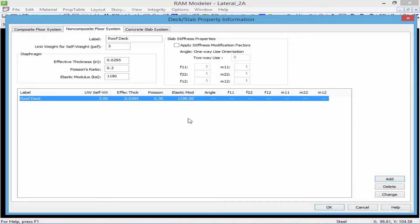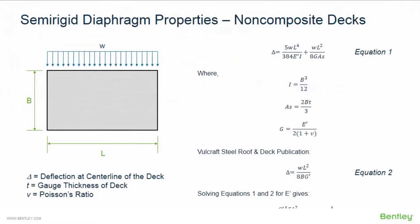You may need to consult your deck manufacturer for determining some of these values. For our sample model we are using a non-composite deck and after some calculations we determined it's not exactly rigid and not exactly flexible, so we're assigning it as a semi-rigid diaphragm. The main goal is to calculate the effective modulus of elasticity, or E-prime. The Steel Deck Institute Diaphragms Design Manual will give you information to calculate these parameters, and you should also consult your local deck manufacturer.